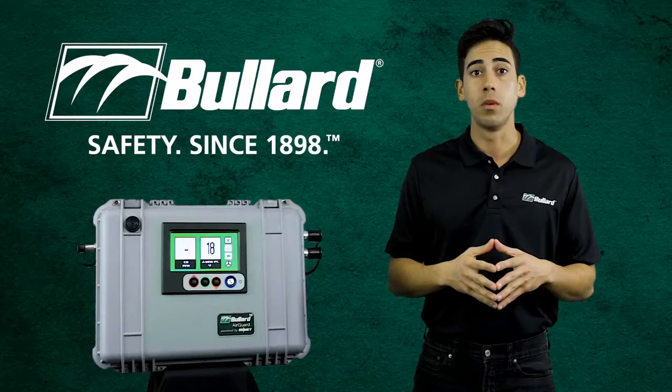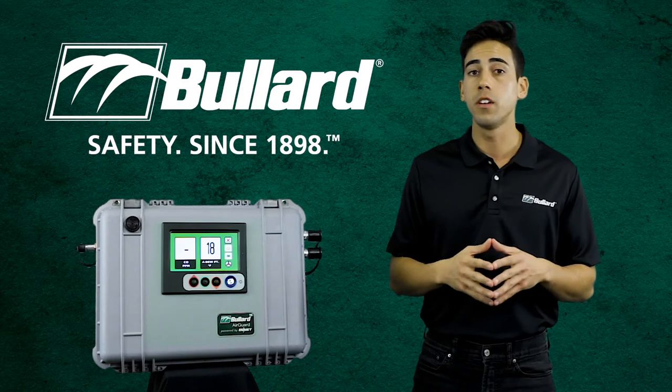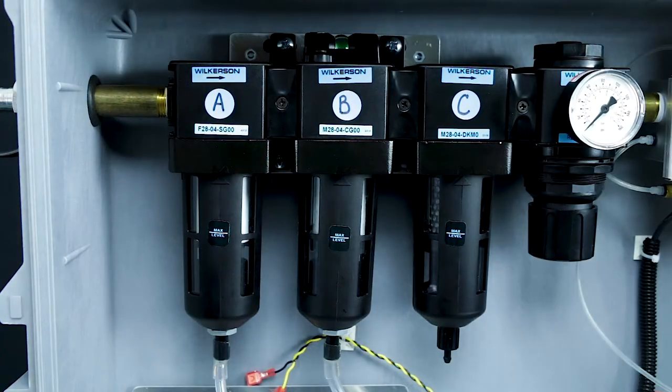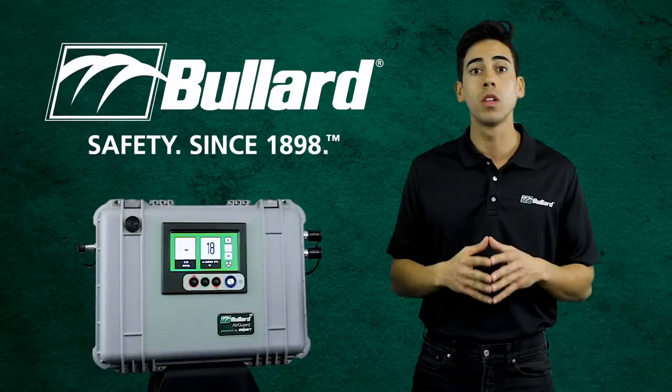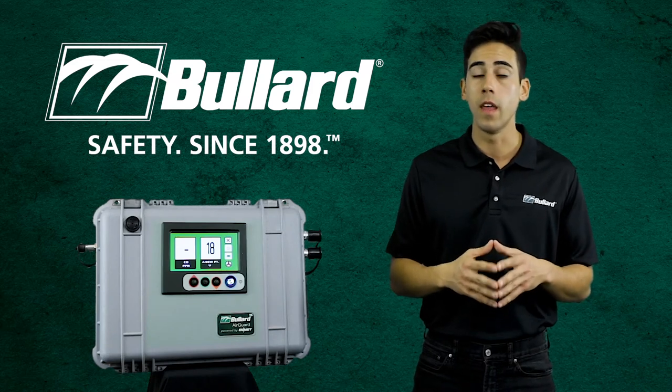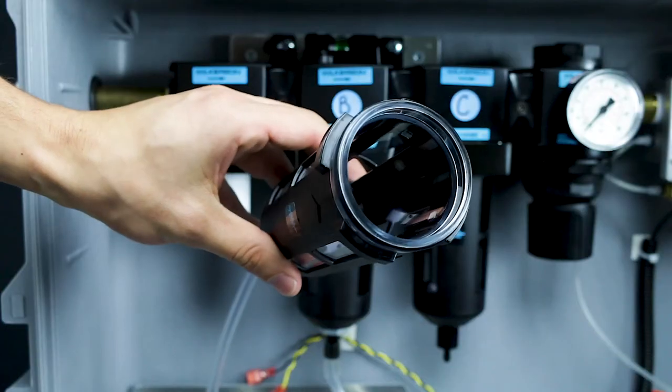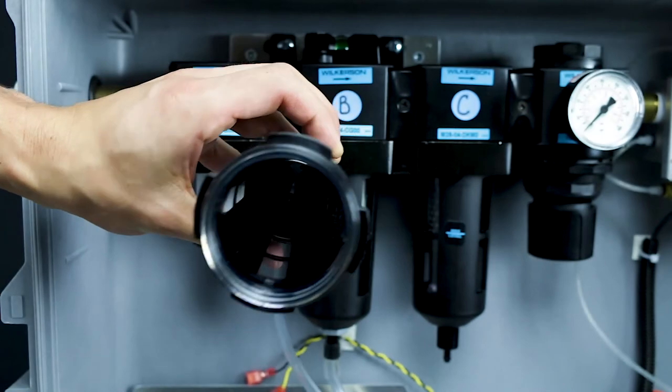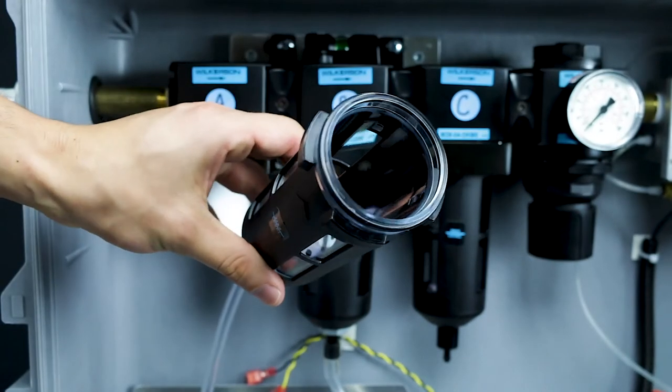To remove the filter bowl from the air train, push the filter bowl up and towards the top of the sample train, then twist left, which will release it from the assembly. Then pull down. Make sure to clean the filter bowl by removing any moisture or particles.